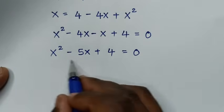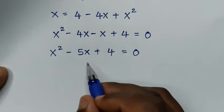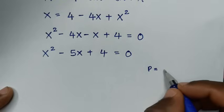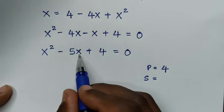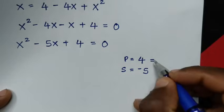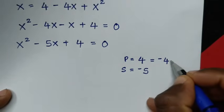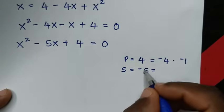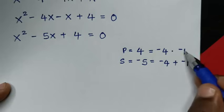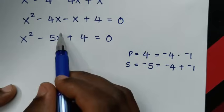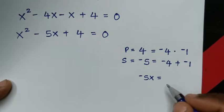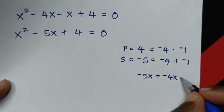From this quadratic equation, it can be solved by grouping and factorization. The product is the coefficient of x squared, which is 1, times 4, so the product is 4. The sum is the coefficient of x, which is negative 5, so the sum is negative 5. To get product 4: negative 4 times negative 1. To get sum negative 5: negative 4 plus negative 1. So our factors are negative 4 and negative 1, meaning negative 5x equals negative 4x minus x.